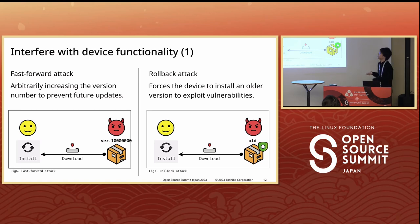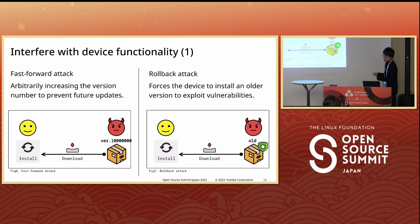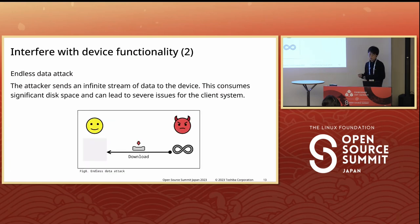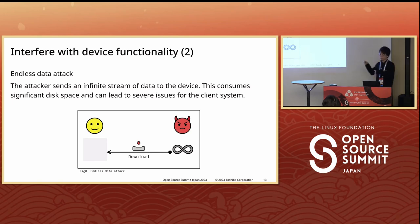Next is attacks that interfere with device functionality. There are three types. The first involves the fast-forward attack and rollback attack, which manipulate the version number to interfere with device functionality. If the version number is increased, the device might see all versions as outdated after installation. Conversely, installing an older version can exploit past vulnerabilities. Next is the endless data attack — during update image downloading, the attacker sends an infinite stream of data to the device, consuming significant disk space and causing issues for the client system.